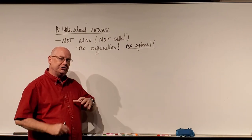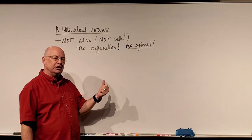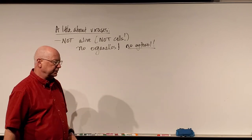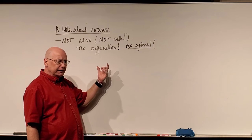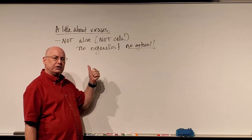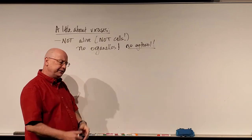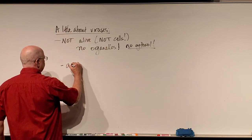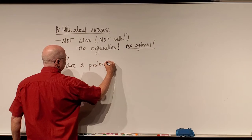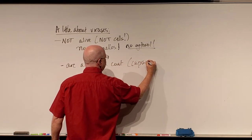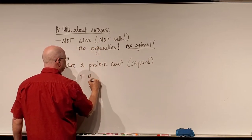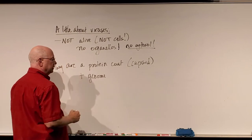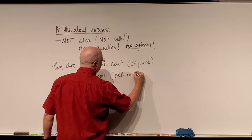Even prokaryotes have a single circular chromosome in a nucleoid region. Eukaryotic cells like us, plants, yeast, and fungi have membranous organelles, ribosomes, and a nucleus with many linear chromosomes. But viruses don't have any of that. They are essentially a protein coat — usually called a capsid — plus a genome. That genome can be DNA or RNA; some viruses use RNA as their genome.